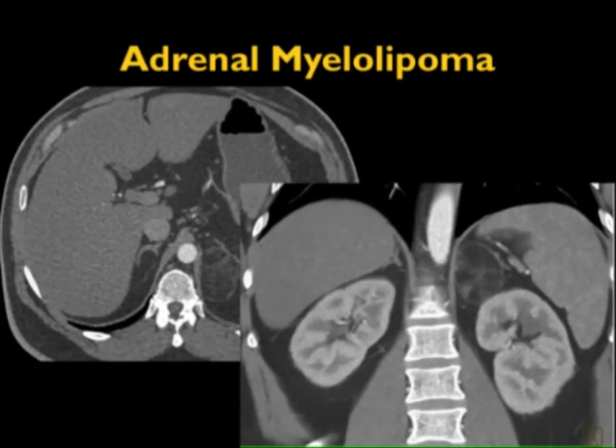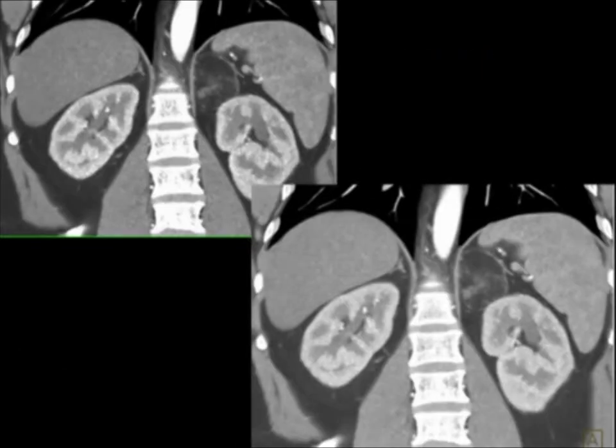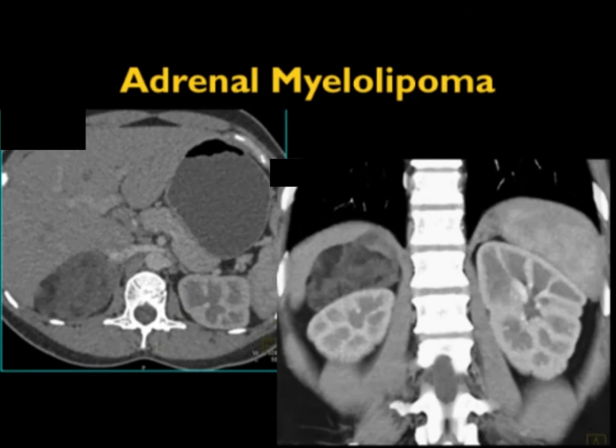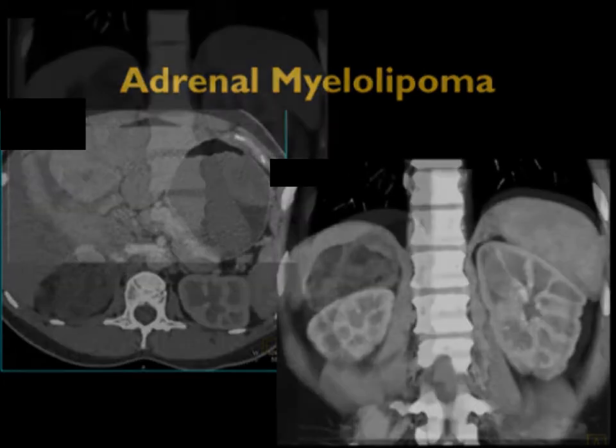Sometimes they have poor borders. Look at this myelolipoma of the left adrenal gland — very impressive indeed, with minimal stranding. One could have worried about hemorrhage. And here's another one — look at the size of this right adrenal myelolipoma, with a very heavy fat component and mottled density. It could have bled in the past, though there was no acute history of bleeding or pain. This is probably the kind of lesion that will be removed prophylactically because of the risk of bleeding, its density appearance, and its size. Here it is very nicely in the coronal view.